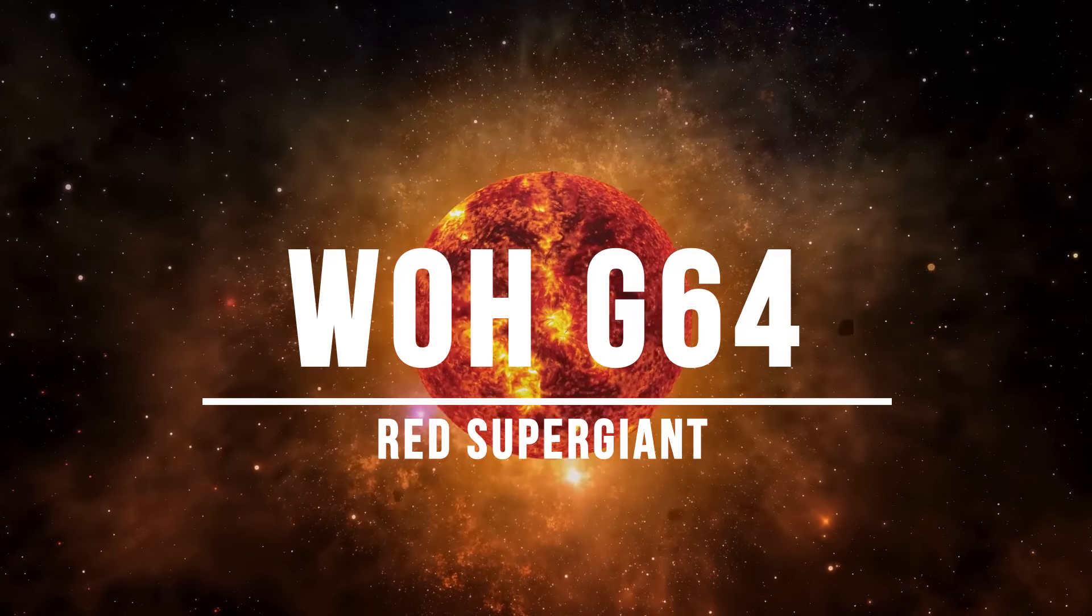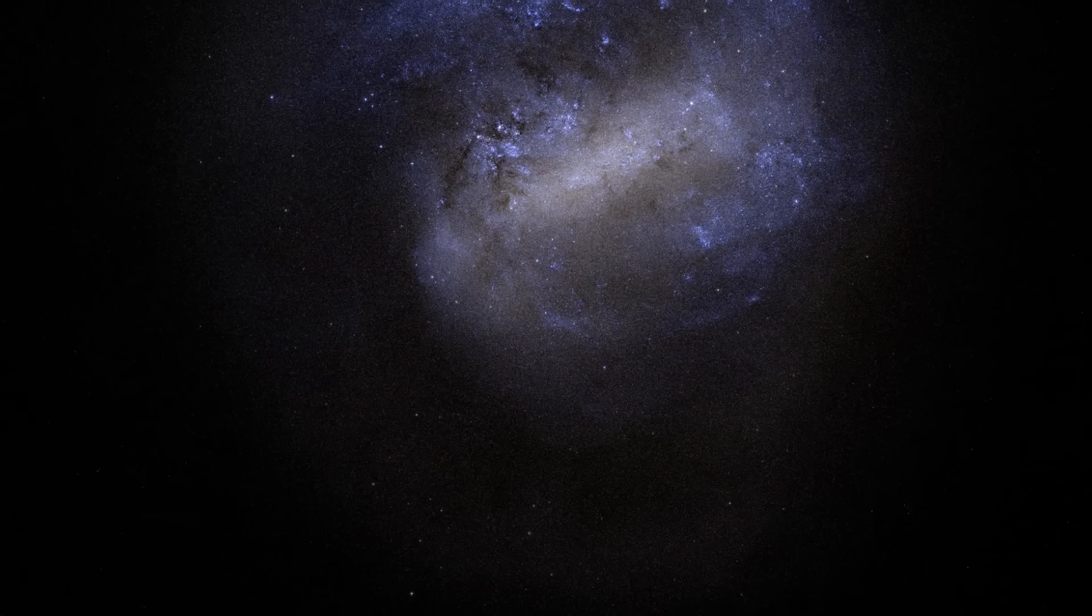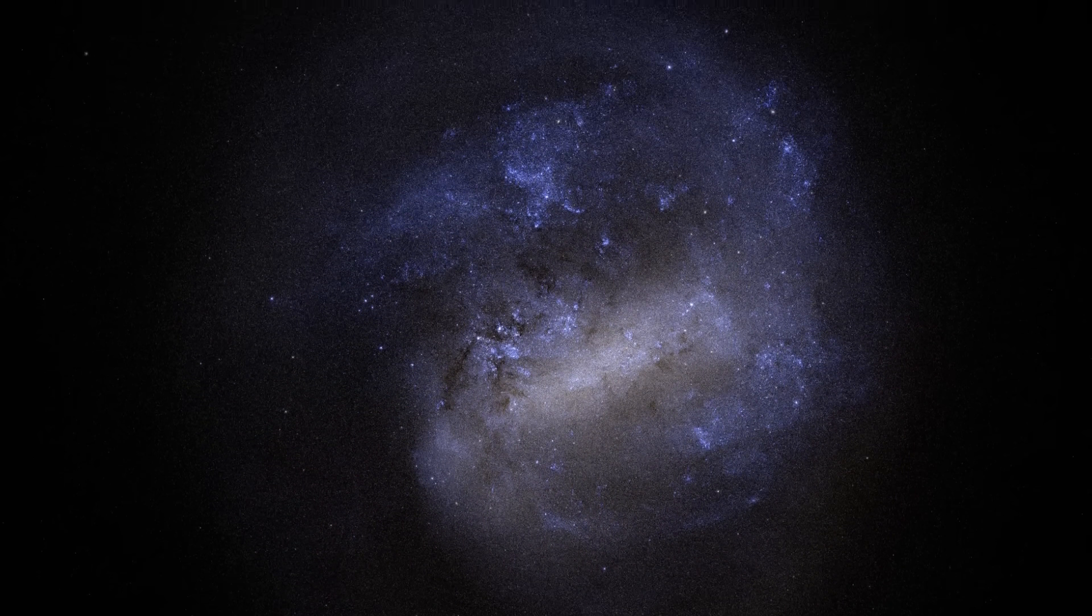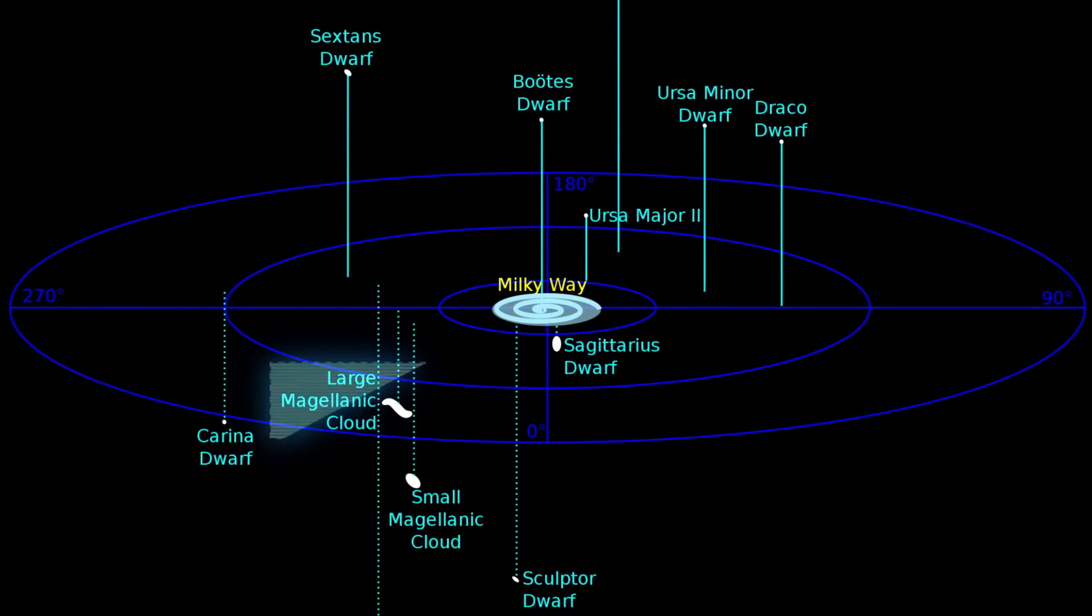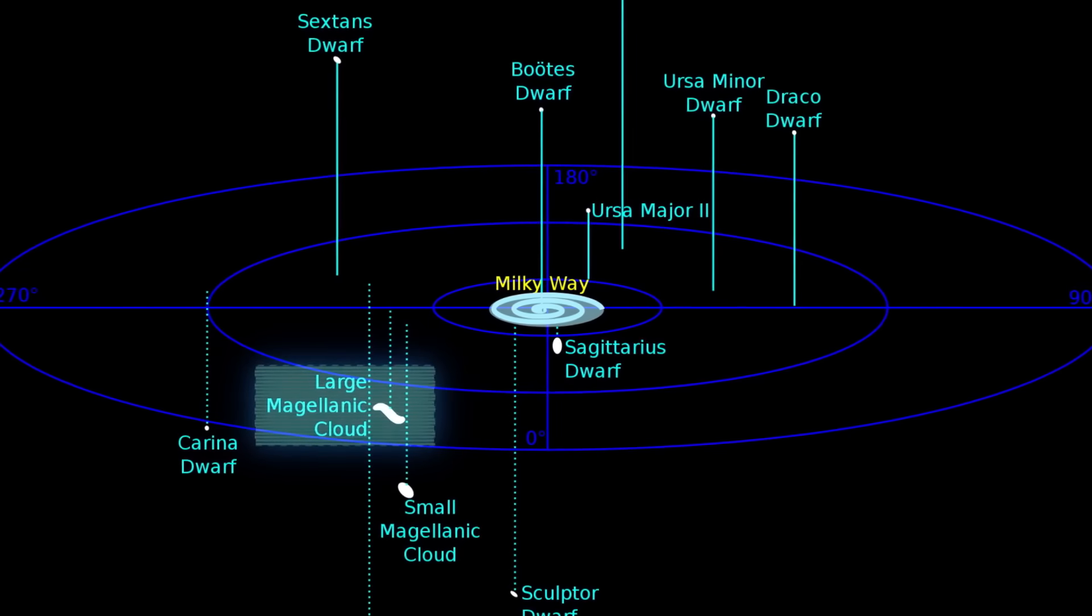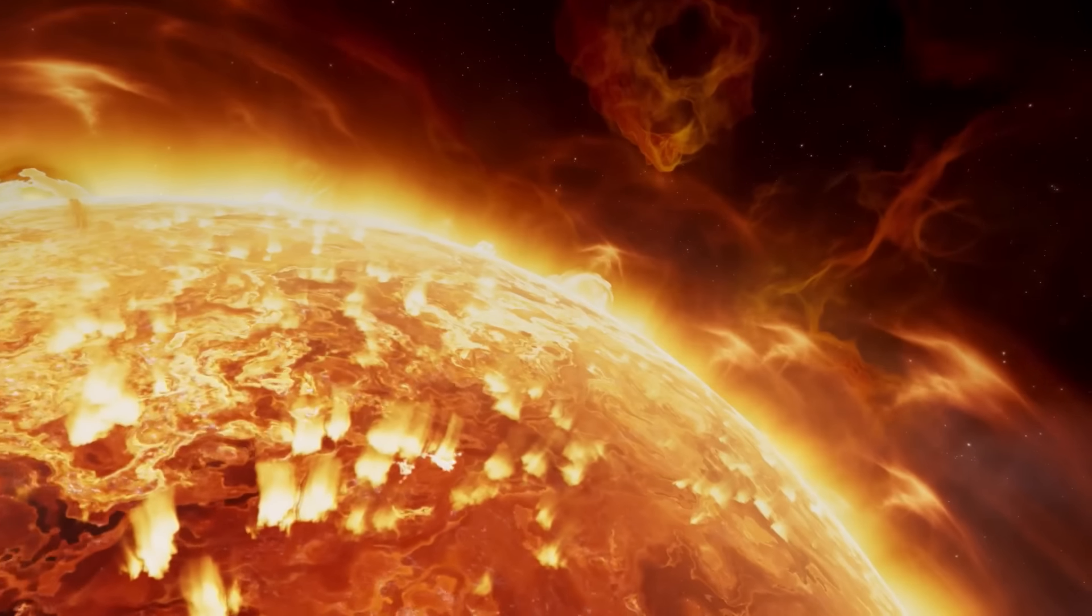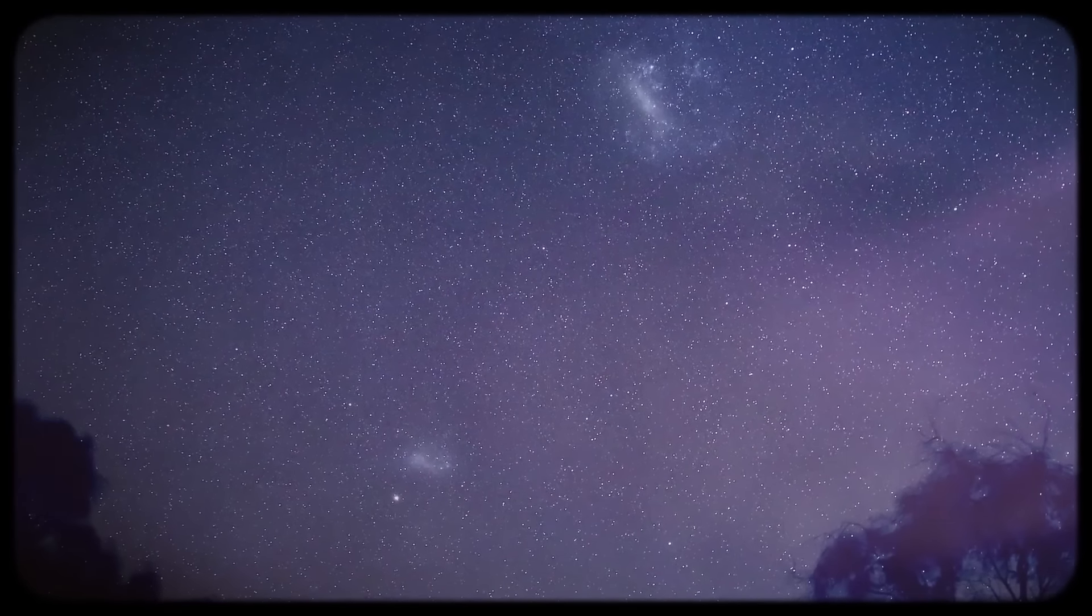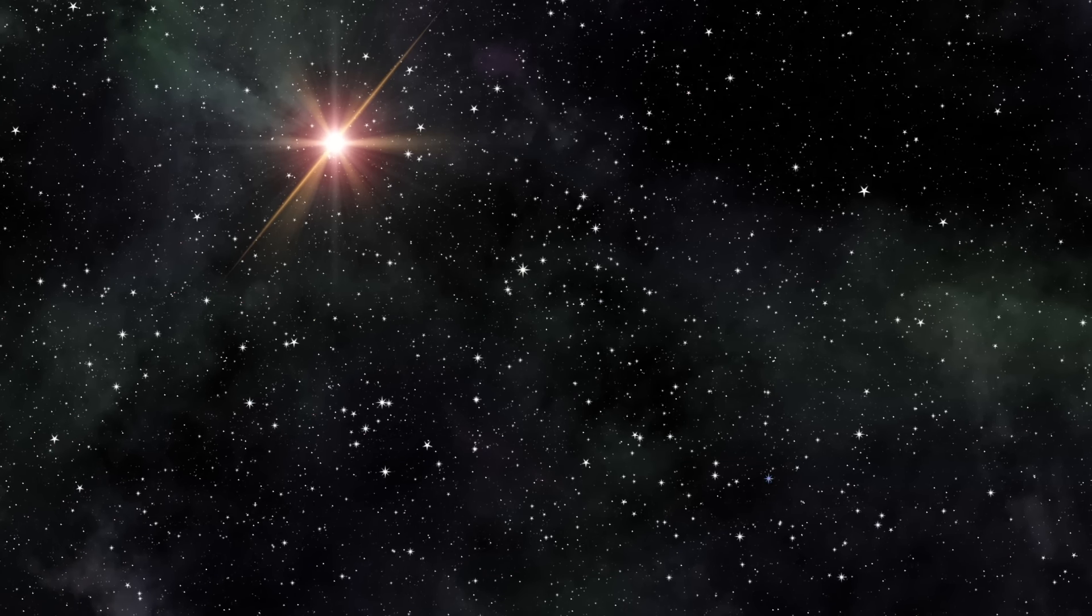Well you could find it out if you managed to visit a planet orbiting WOH G64. It's a red supergiant, an enormous star dwelling in the Large Magellanic Cloud, which is a satellite galaxy located not too far away from our home Milky Way galaxy. Red supergiants in the Large and Small Magellanic Clouds provide an excellent opportunity to observationally test the current stellar evolution theory for massive stars.